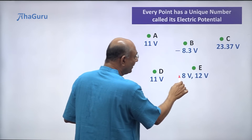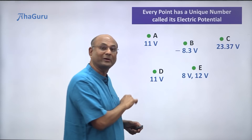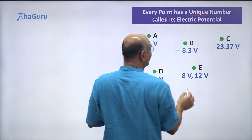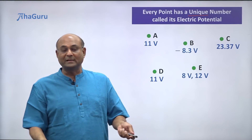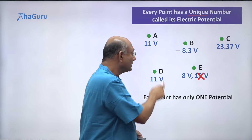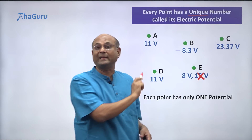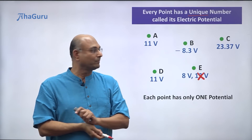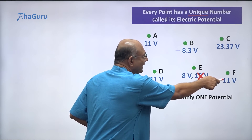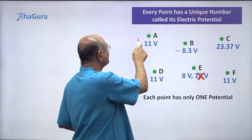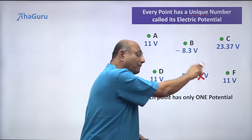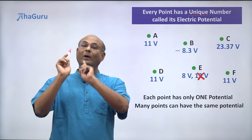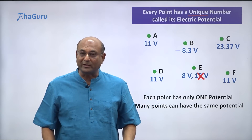But if point E has two numbers, two potentials — is that okay? No. Every point has a unique number, so E cannot have two numbers. Each point has only one potential. You can have point F having 11 volts, D also has 11 volts, A also has 11 volts — multiple points can have the same potential. But one point cannot have multiple potentials.